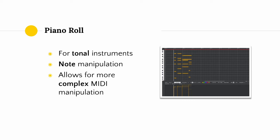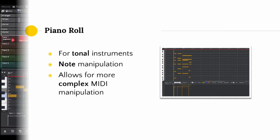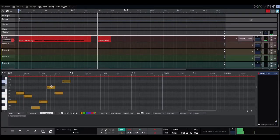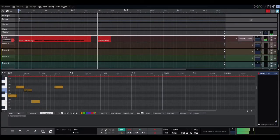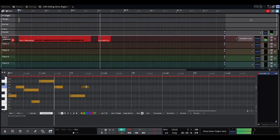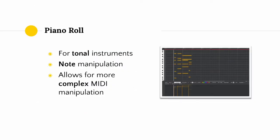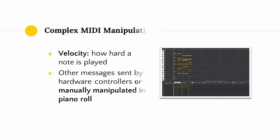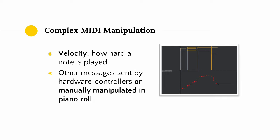One type of MIDI editing is done in a piano roll, analogous to the piano roll used in player pianos. You draw notes on the piano roll, and when you press play in your DAW, the MIDI notes are played out on whatever plugin you have set up to receive them. The piano roll is most useful for tonal instruments where you care about what notes are being played. Most piano rolls give you basic manipulations like adding and deleting notes, moving notes, changing the length of notes, changing the pitch of notes, cutting, copying, and pasting, as well as splitting notes using a knife tool. Compared to the step sequencer, the piano roll is generally more sophisticated, allowing for more complex manipulation of MIDI data.